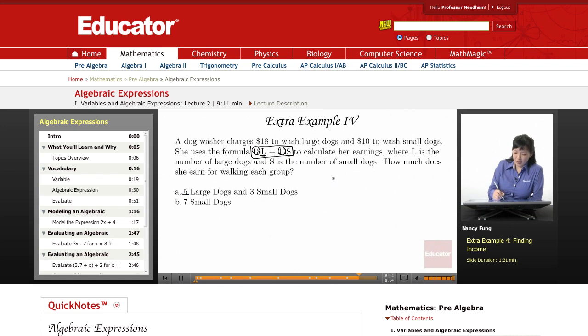The first one is 5 large dogs. So I'm going to say 18, and in place of L, 5, plus 10, and in place of S, 3.